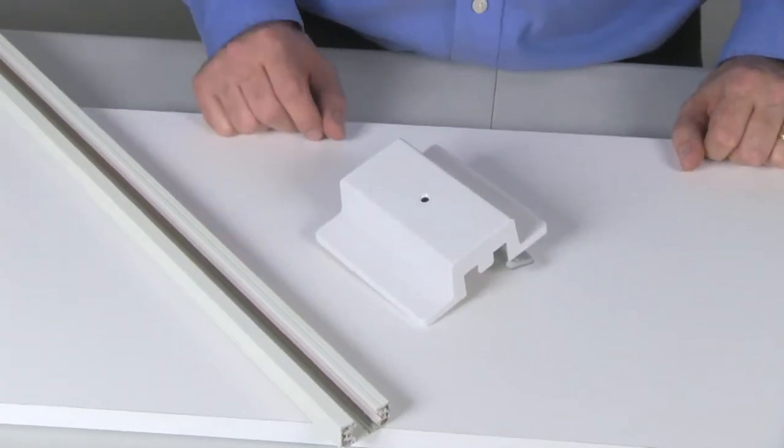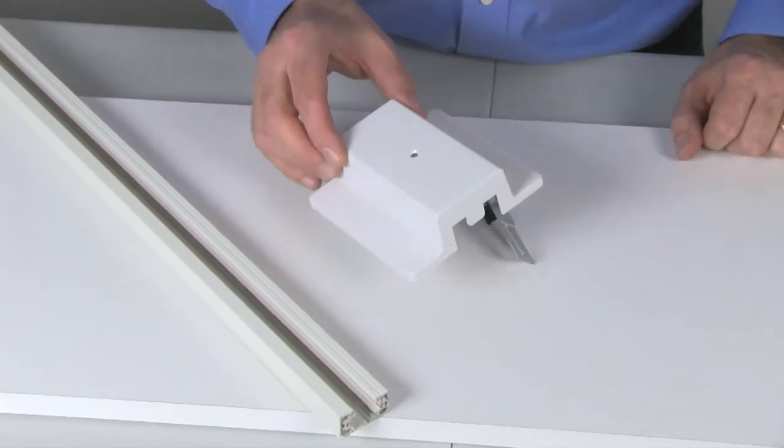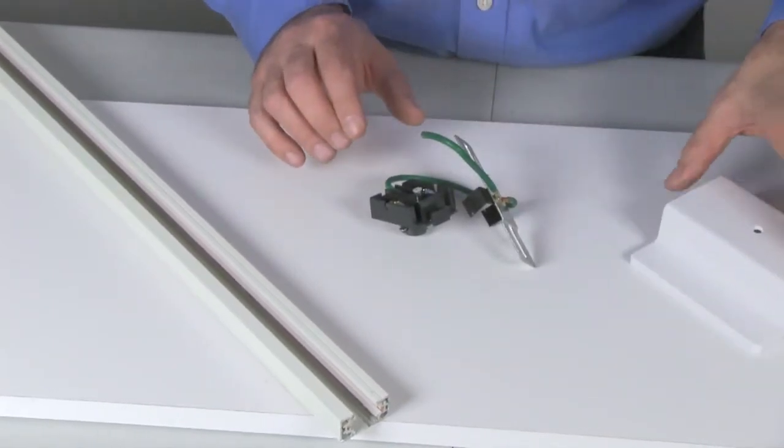The canopy connector allows you to connect the electrical power anywhere along the length of your track. So remove the canopy.